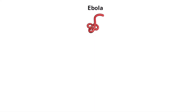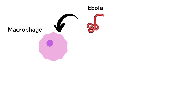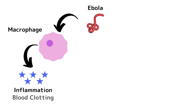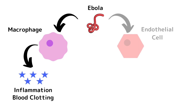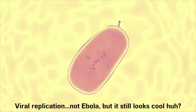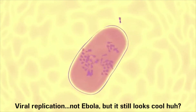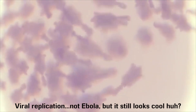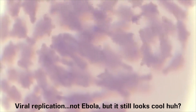Ebola does its damage by infecting two main cell types in the body. First, it infects cells of the immune system, like macrophages, causing them to release chemicals that promote inflammation and blood clotting throughout the body. The virus also infects endothelial cells — the cells lining the blood vessels — damaging their vascular integrity, which leads to hemorrhaging. And as the virus replicates and spreads throughout the bloodstream, your blood circulation is compromised.